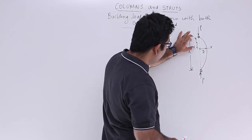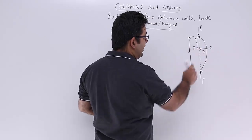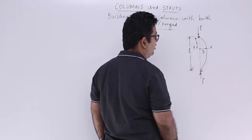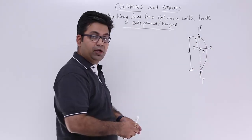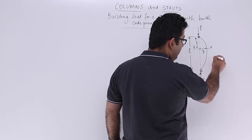Let's assume at a distance x from the top end, a section XX at which the deflection of the column is y. Before we go into this, if your column is bending, so this is the mean position.